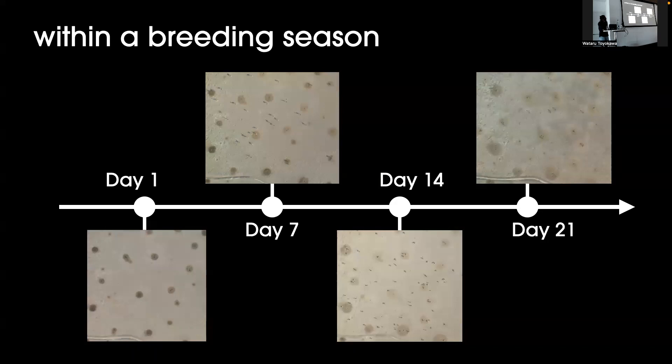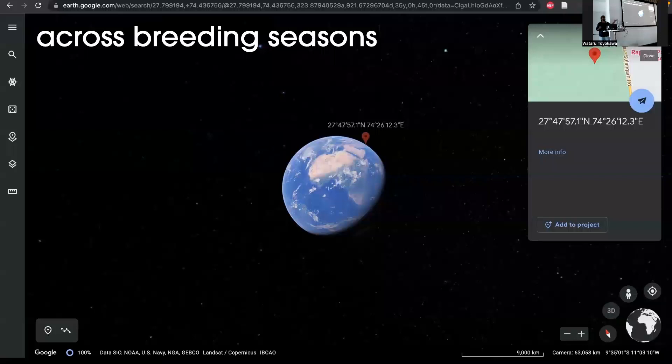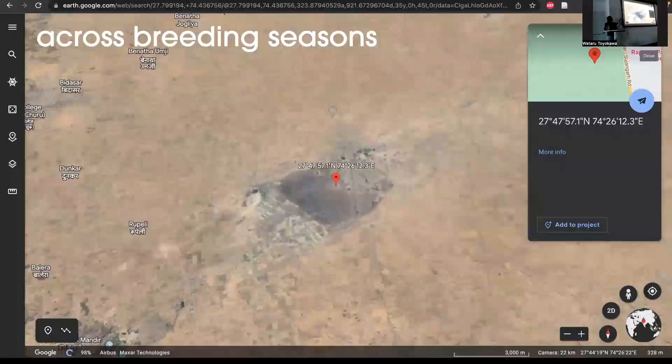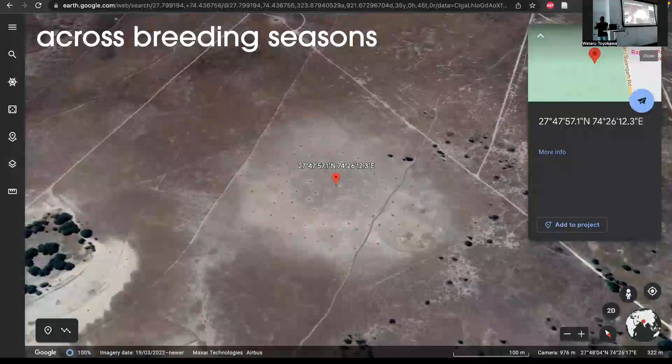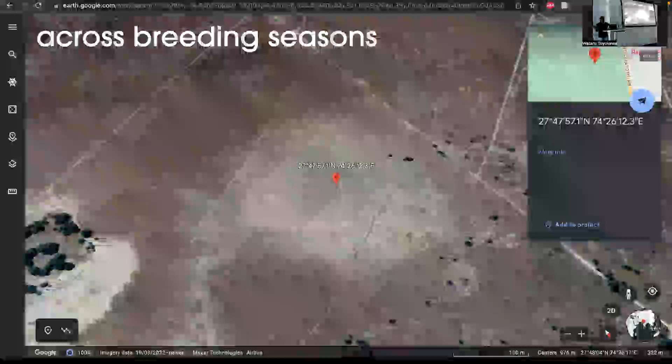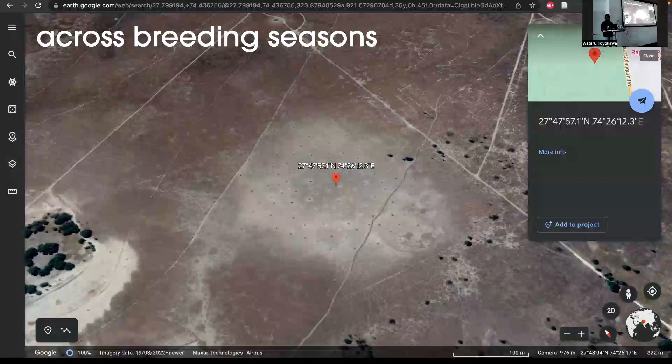Not only can we look at this within a year, these animals actually modify the land so much that you can see this from space. Thanks to historic imaging, we can go back and start looking at these territories and how they're structured across years. We're now trying to quantify formation of these territories within a season and across the season. Once we have the tracking, try to look at mate choice in this system. That's about what I have to say today. Thank you so much.